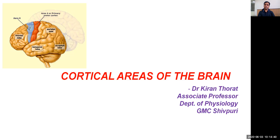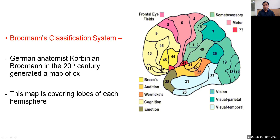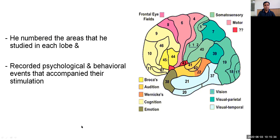Now let us continue our discussion on the particular areas of the brain with the lobes of the brain. As we have studied previously, each hemisphere of the brain consists of four lobes: frontal lobe, parietal lobe, occipital lobe, and the temporal lobe. Before we proceed with each lobe separately, we should know Brodmann's classification system. German anatomist Corbinian Brodmann, in the 20th century, generated a map of the cortex covering the lobes of each hemisphere, numbered the areas he studied, and recorded psychological as well as behavioral events.